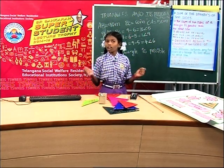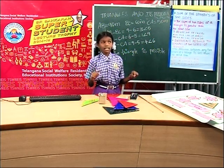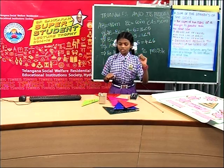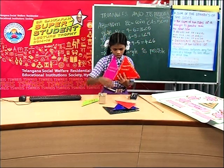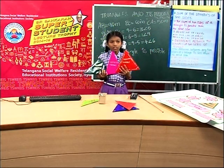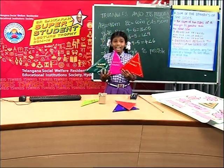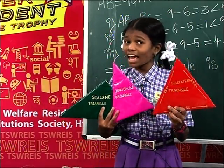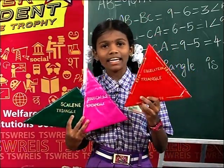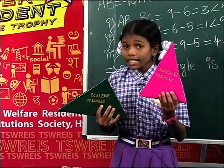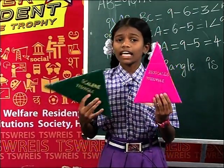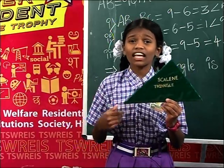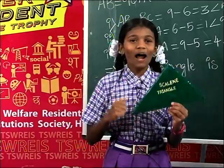Friends, let us recall what we have learnt. Triangles are classified into two types: based on sides and based on angles. Based on sides, we have three types: equilateral triangle — a triangle having three sides of equal length; isosceles triangle — a triangle in which two sides are equal; scalene triangle — a triangle in which all three sides are different.